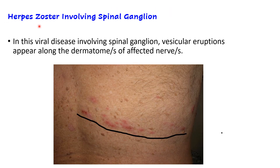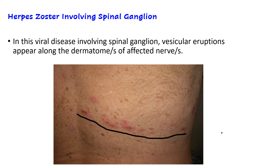There is a condition known as herpes zoster, a viral infection that can involve the spinal ganglion. In this viral disease involving the spinal ganglion, vesicular eruptions appear along the dermatome of the affected nerve — sometimes one nerve is involved, sometimes more. The eruptions will be along a line corresponding to the distribution of the nerve; for example, along the dermatome of the sixth intercostal nerve.